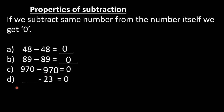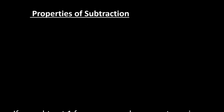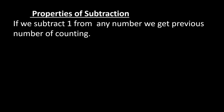In D part, dash minus 23 is equal to 0. From which number do we subtract 23 to get answer 0? The same number, that is 23. Now in property number 3: if we subtract 1 from any number, we get the previous number of our count.